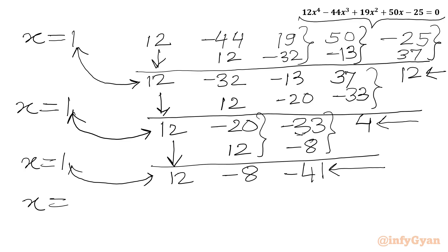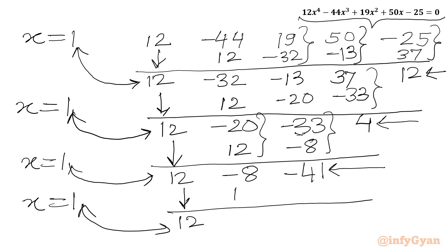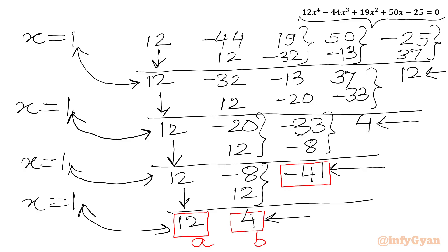Now for the last stage, we consider the leading coefficient 12 as it is, multiply 1 with 12, and write it here. Adding these two numbers gives 4. So 4 is our remainder. Now I will write the values of A, B, C, D, and E: A is 12, B is 4, C is minus 41, D is 4, and E is 12. So we can write our required quartic equation directly using this method.